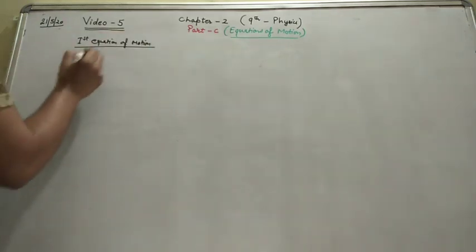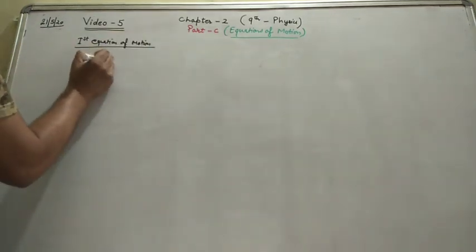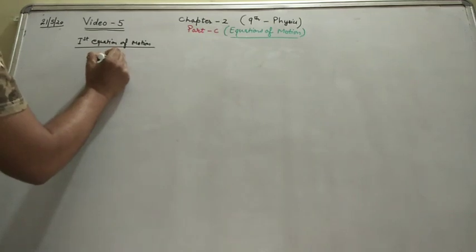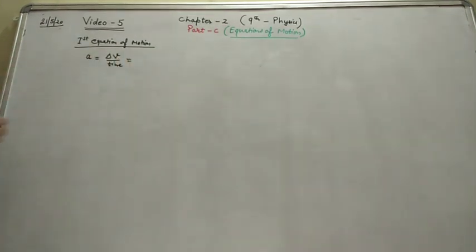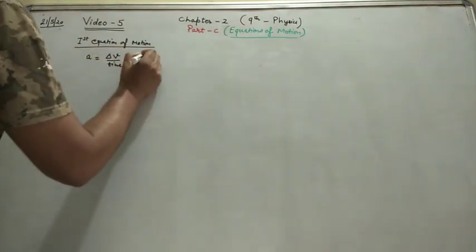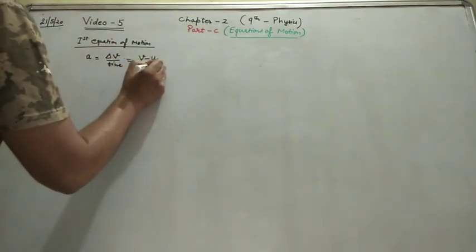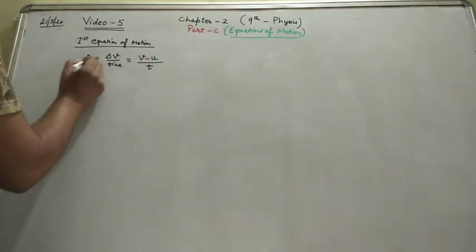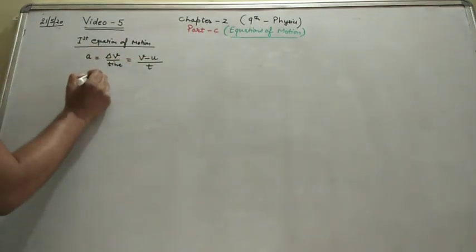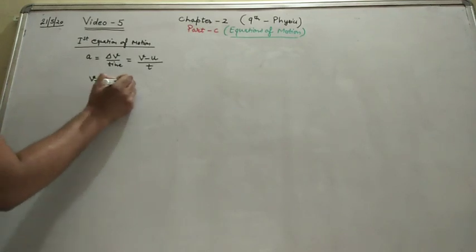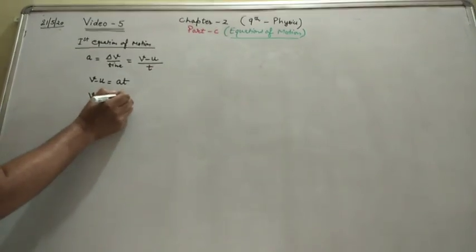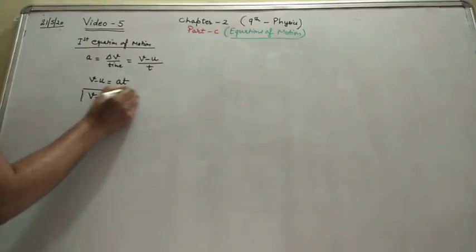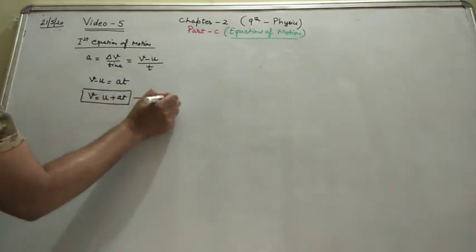As you know, acceleration is equal to change in velocity upon time. Delta means change, so that is final velocity minus initial velocity upon time. If you cross multiply, you will get V minus U is equal to aT, or simply V is equal to U plus aT. This is the first equation of motion.